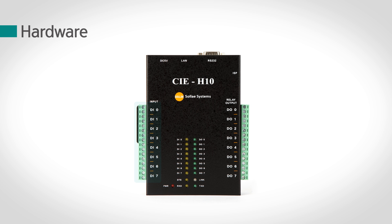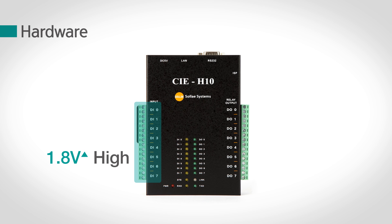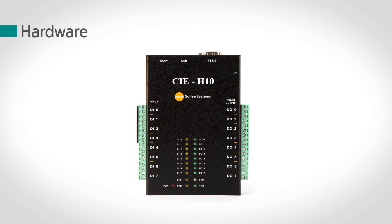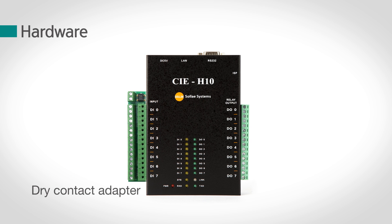There are 8 photocouplers for input ports. Higher than 1.8V is recognized as high and lower than 1.2V as low. To send a signal to a switch or relay, an additional dry contact adapter is required.